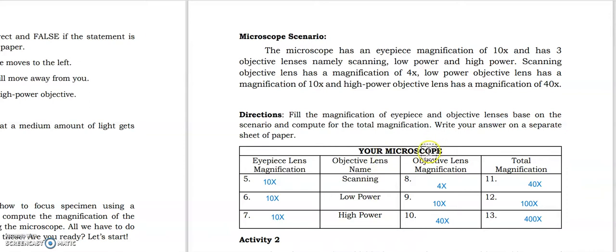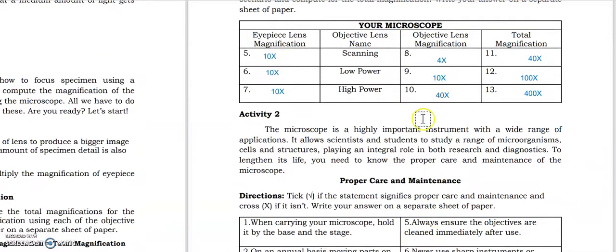So let's fill in the magnification. So for the eyepiece lens, so 10x, it's all. For the scanning, it's 4x. Low power, 10x. High power is 40x. So your microscope, if you combine the eyepiece lens with 10x and the objective lens which is the scanning, your total magnification is 40x. 10 times 4 is 40, and copy lang yung x. The same sa iba.